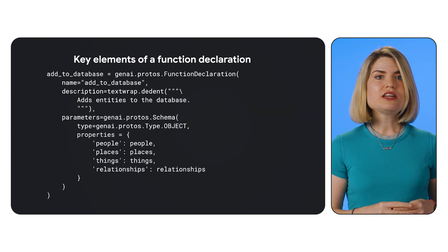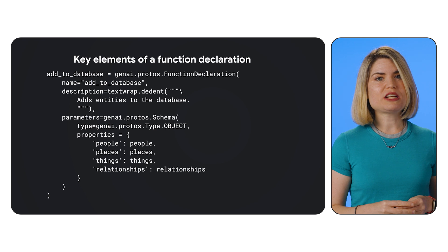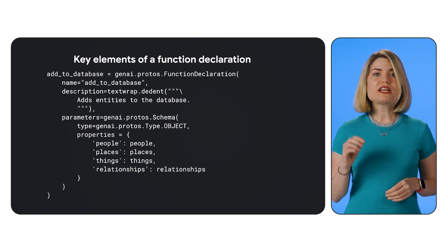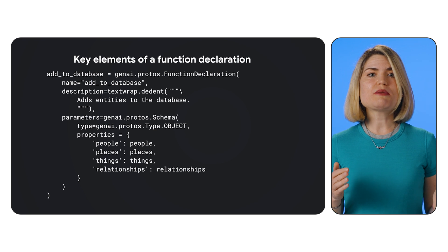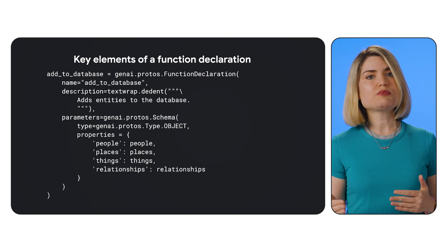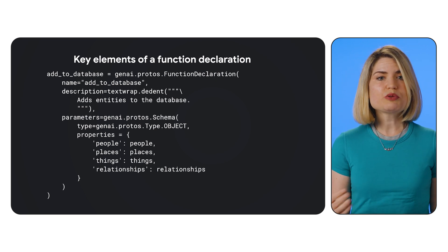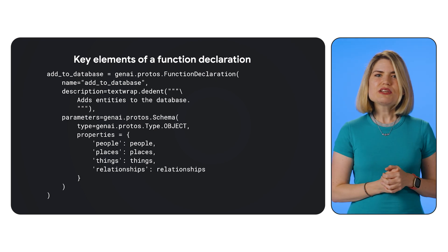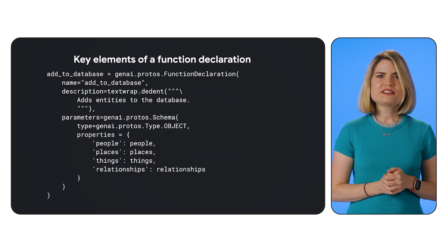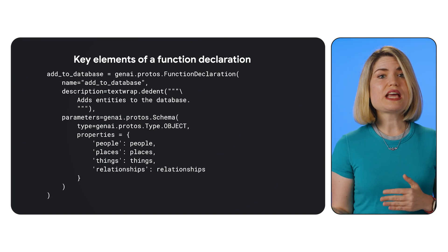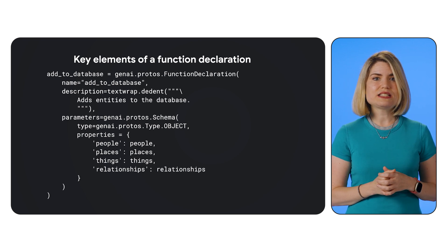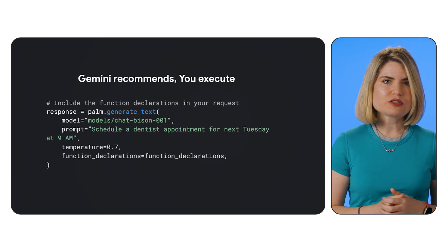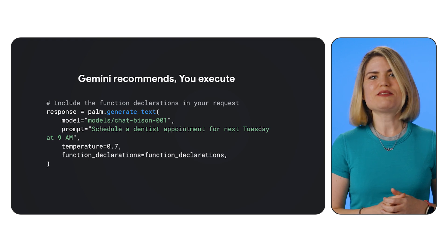To use function calling, you need to define the functions you want Gemini to use. You do this by providing function declarations. These are like blueprints that tell Gemini about your functions — their names, descriptions, parameters they accept, and what they do. Think of it like an instruction manual for Gemini; you're specifying the tools it can use and how to use them. We'll use a simplified example from the Gemini documentation, defining a function to add entities to a database.